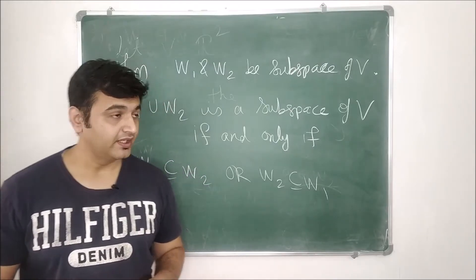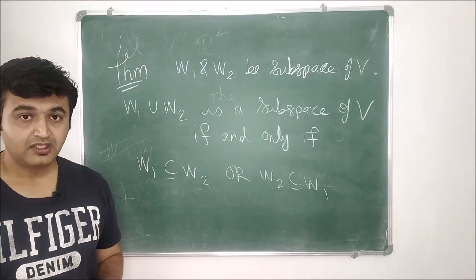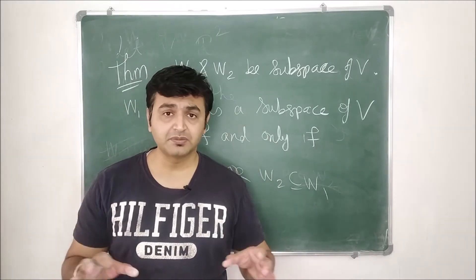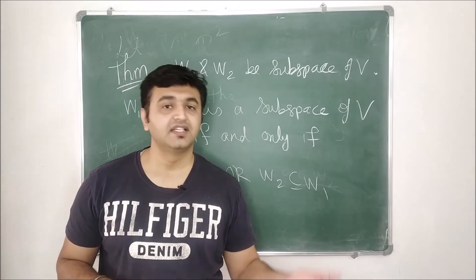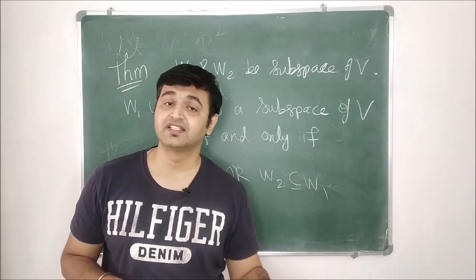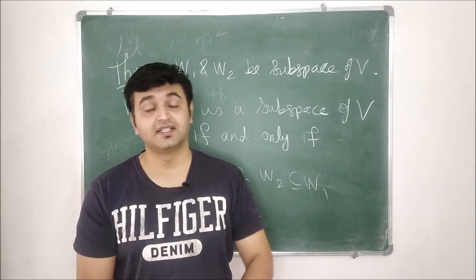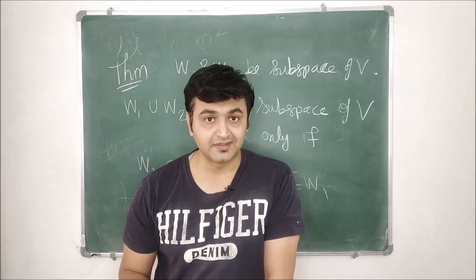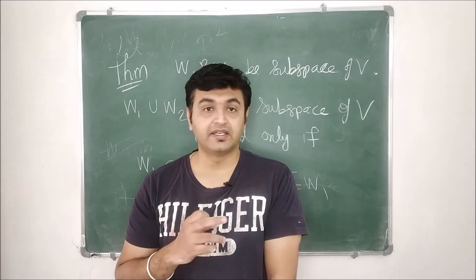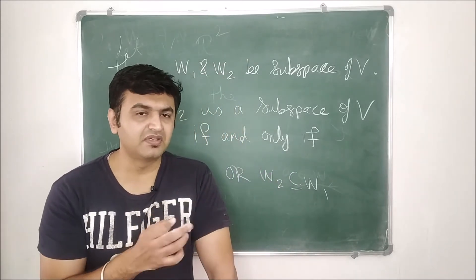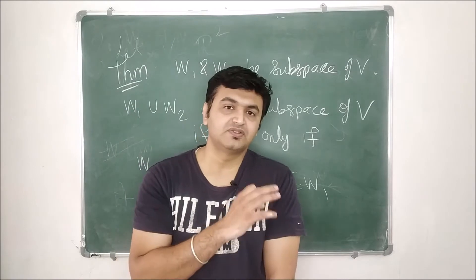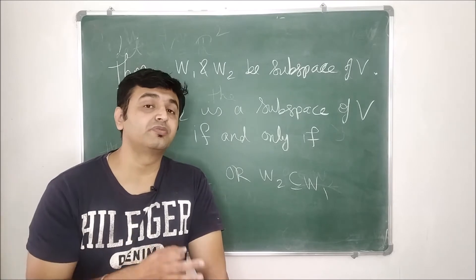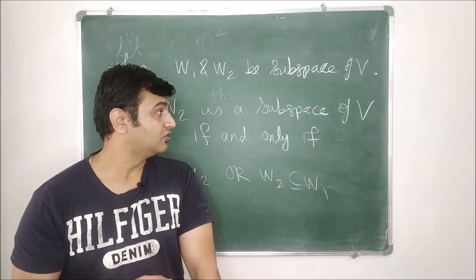Today we are going to see the proof of this theorem. We have seen in my earlier lecture — link is in the description — that if you have two subspaces, their addition is again a subspace, scalar multiplication is again a subspace, intersection of two subspaces is again a subspace. We also saw an example where union of subspaces need not be a subspace. I will give a different example here as well, explaining why the union of subspaces may not be a subspace.